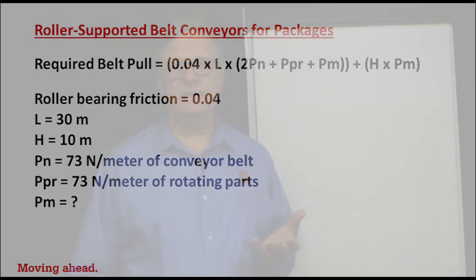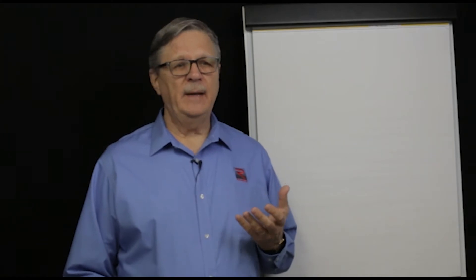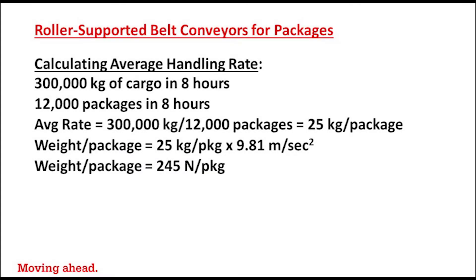And pm, we need to calculate based on typically an average handling rate in a facility. Let's assume the facility will be handling 300,000 kilograms in an eight-hour shift, consisting of 12,000 packages. 300,000 kilograms divided by 12,000 packages gives us 25 kilograms per package. We convert that to weight: 25 kilograms times 9.81 meters per second squared gives us 245 newtons per package.